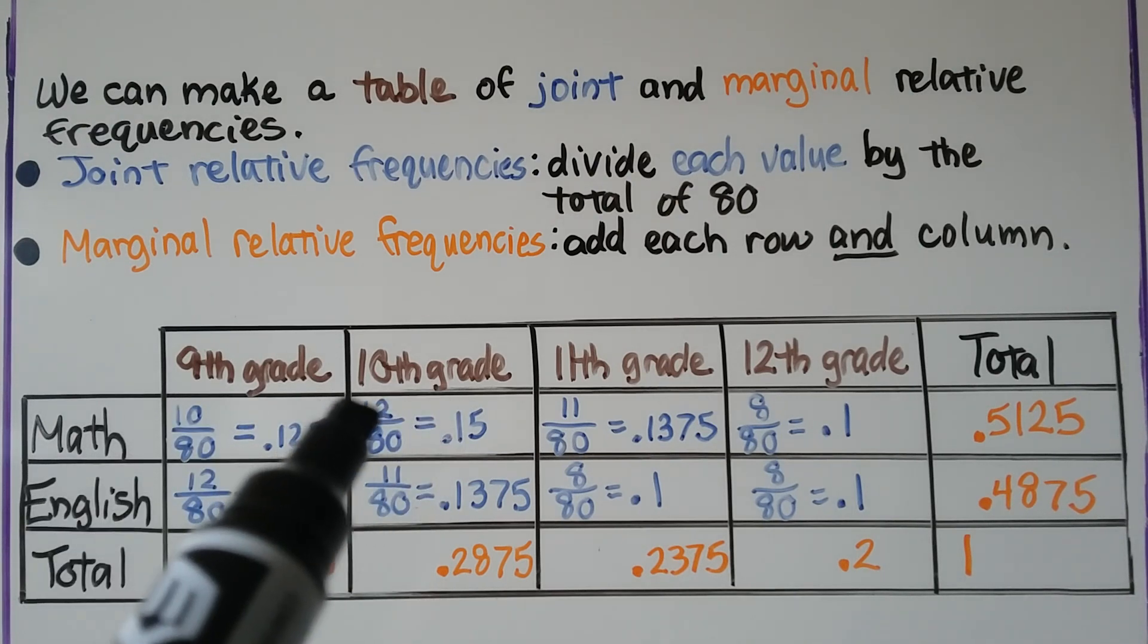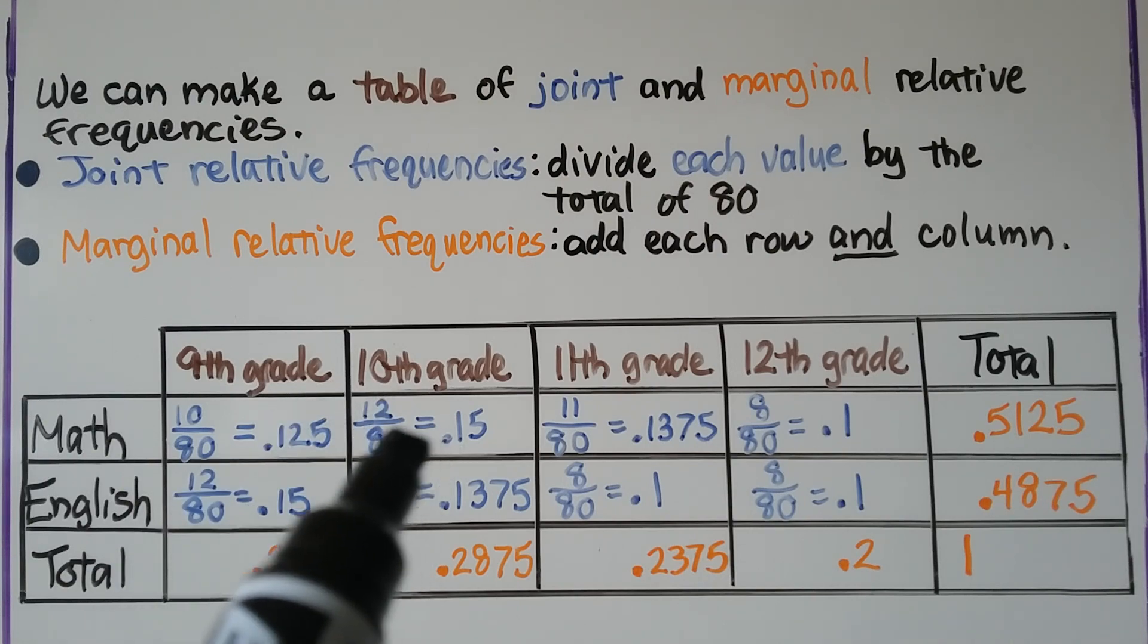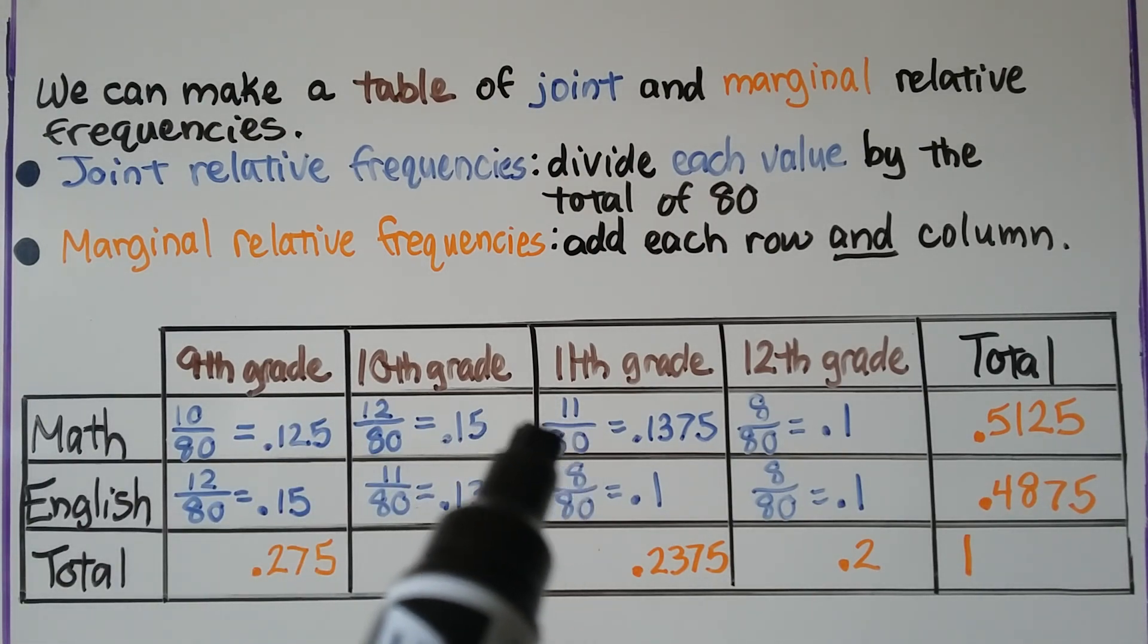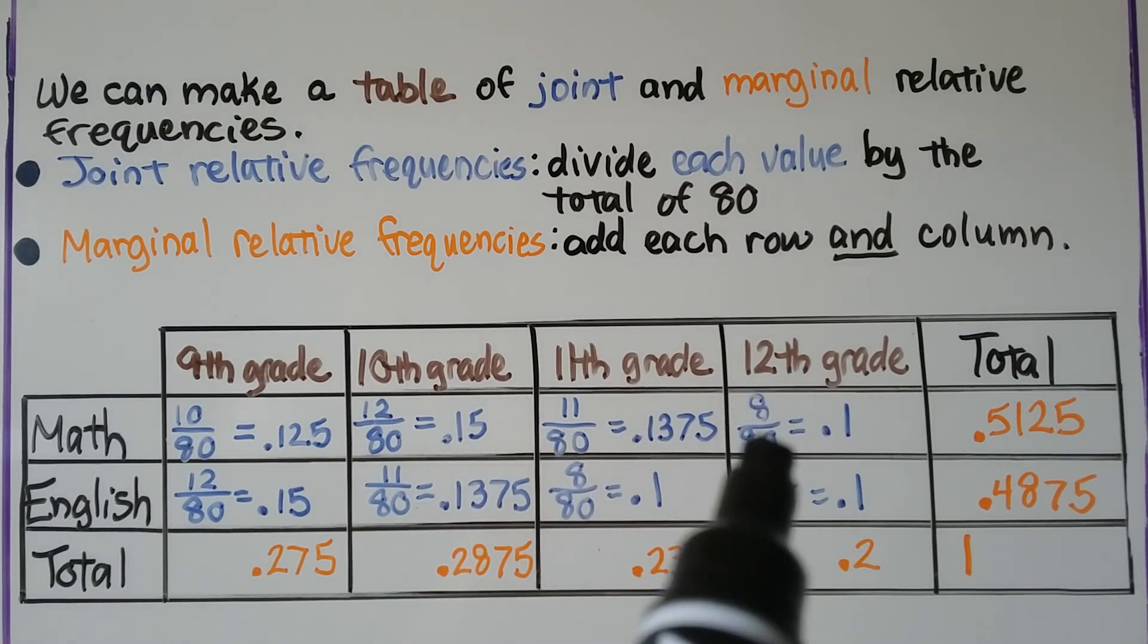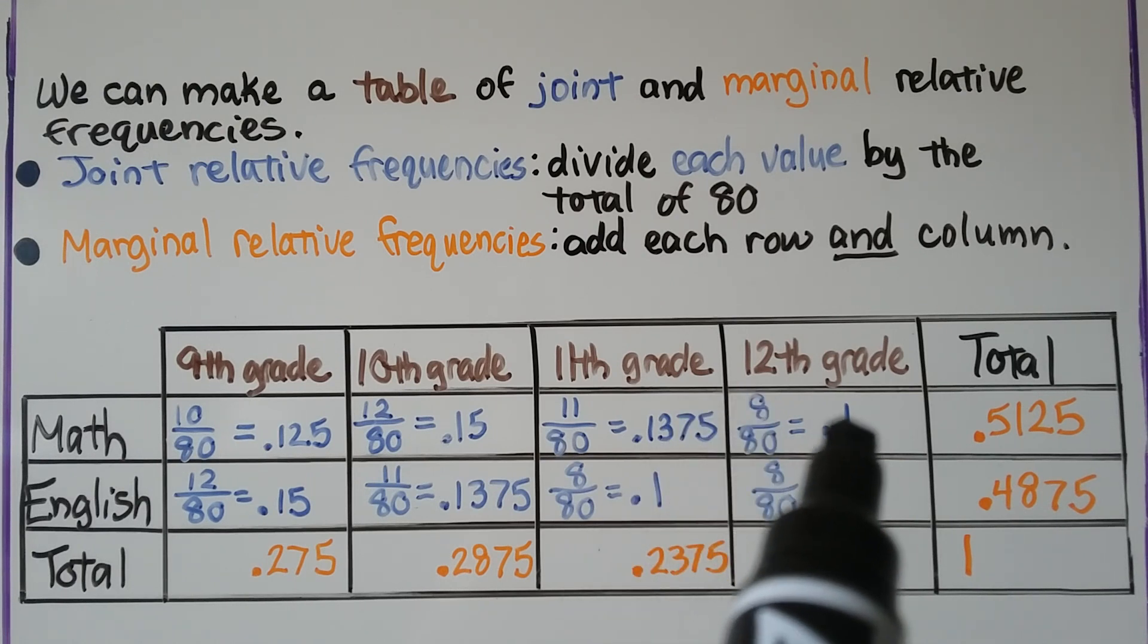In tenth grade twelve liked math so we have twelve eightieths, that's 0.15. There were eleven in eleventh grade, that's eleven eightieths, that's 0.1375, and in twelfth grade eight liked math, that's eight eightieths or 0.1.